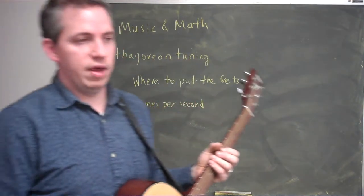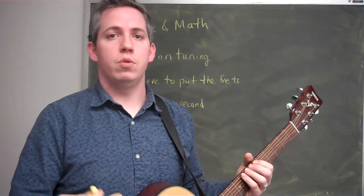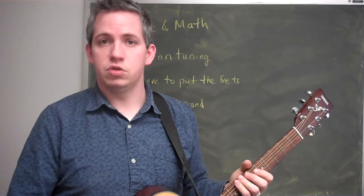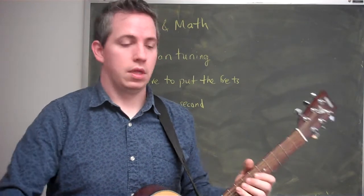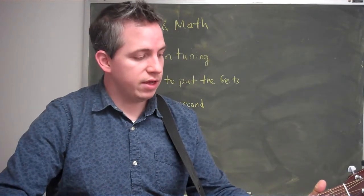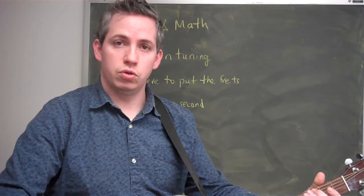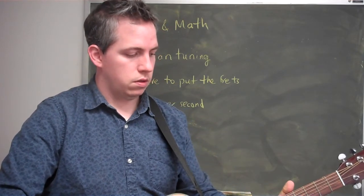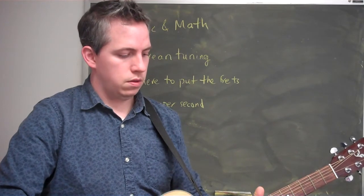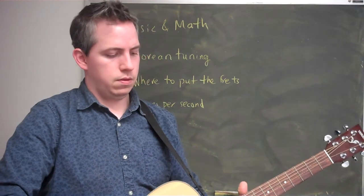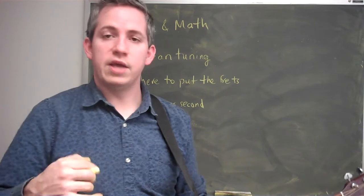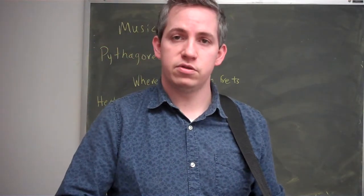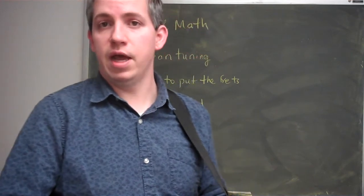So if I play a string and it vibrates at 288 hertz, it would vibrate 288 times per second. At 500 hertz, it would vibrate 500 times per second. As I want it to vibrate faster, I can just start playing a shorter and shorter string. So as I move up, the string gets shorter, it vibrates faster, and it sounds like a higher note to us.